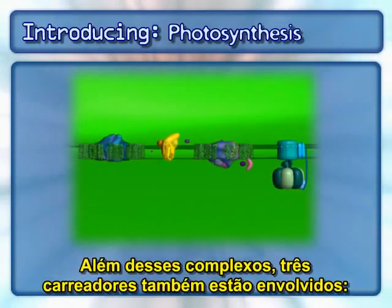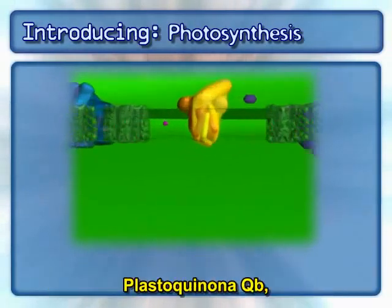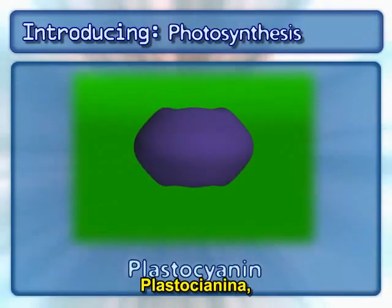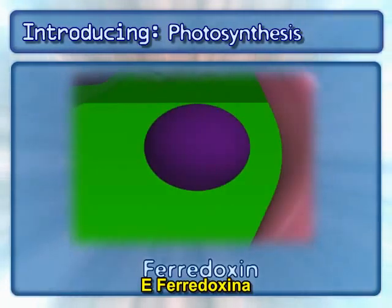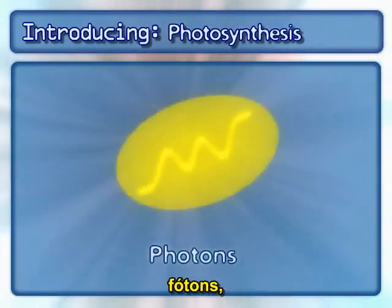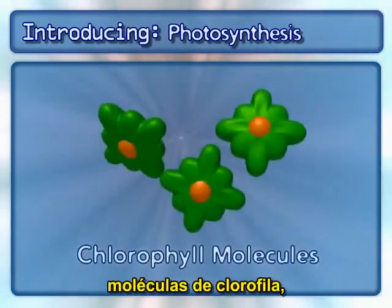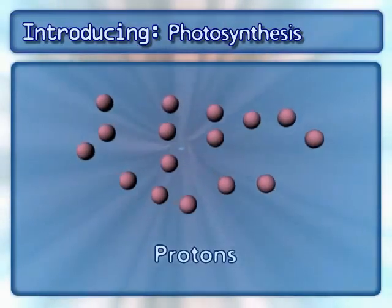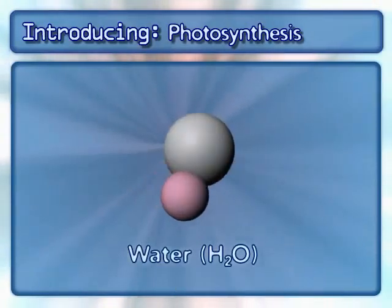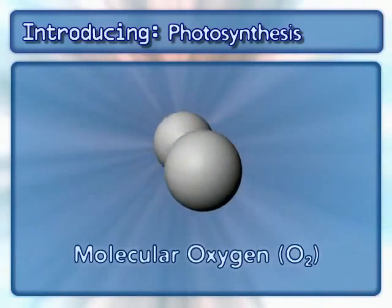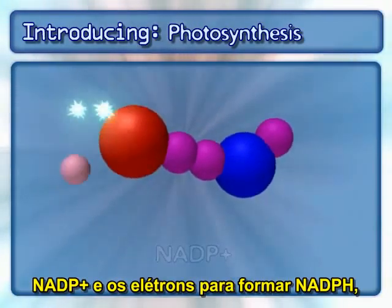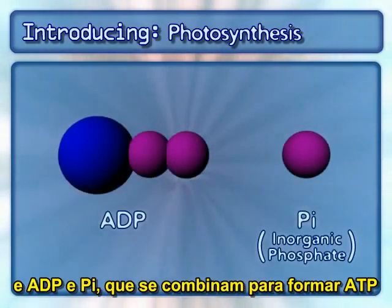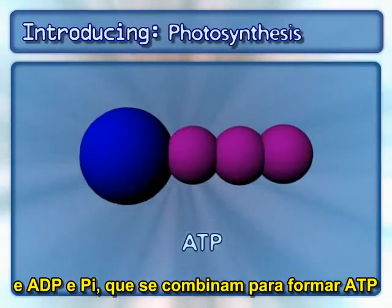In addition to the complexes, three mobile carriers are also involved: plastoquinone QB, plastocyanin, and ferredoxin. Other key components include photons, chlorophyll molecules, protons, water, molecular oxygen, NADP and the electrons to form NADPH, and ADP and PI, which combine to form ATP.